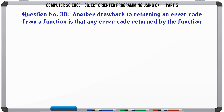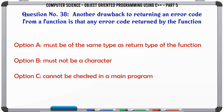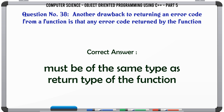Another drawback to returning an error code from a function is that any error code returned by the function. A. Must be of the same type as the return type of the function. B. Must not be a character. C. Cannot be checked in a main program. D. Can have multiple meanings. The correct answer is: Must be of the same type as the return type of the function.